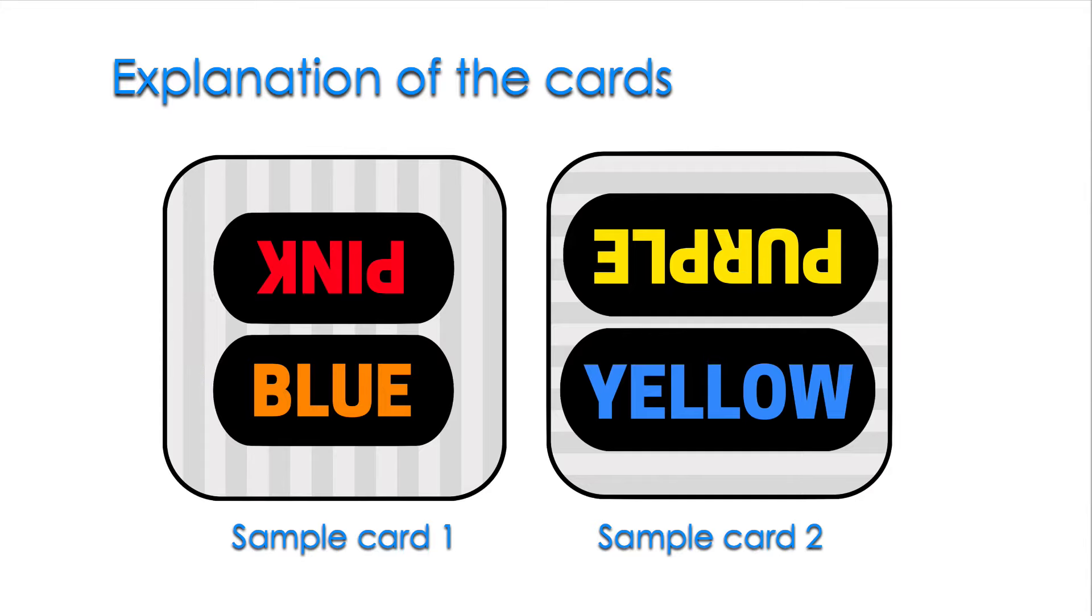Let's look at some sample cards. Sample card one. We will focus on the bottom word. Notice that the lines in the background are vertical. Therefore, the answer to this card is orange.